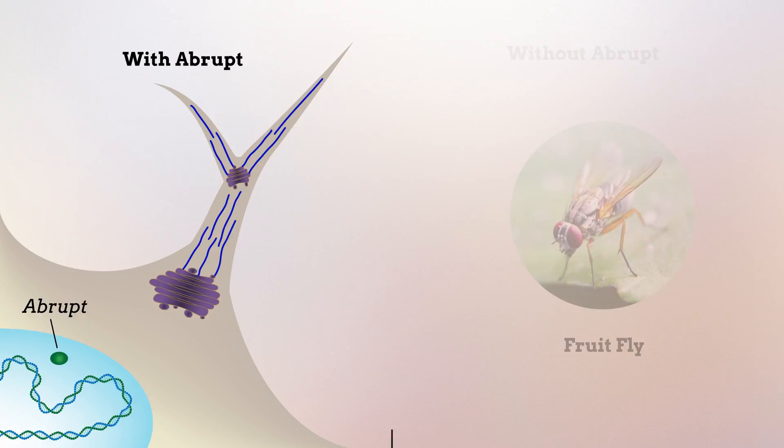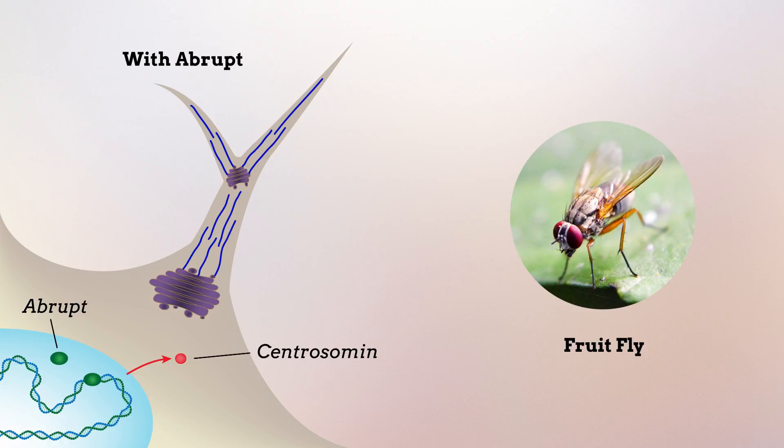In fruit fly neurons, abrupt induced the production of microtubule-related proteins, in particular centrosomin — the same protein that helps cells to properly separate their chromosomes during cell division. Within the dendritic tree, centrosomin clustered along dendritic branches, especially at branch points and at the tips of branches.